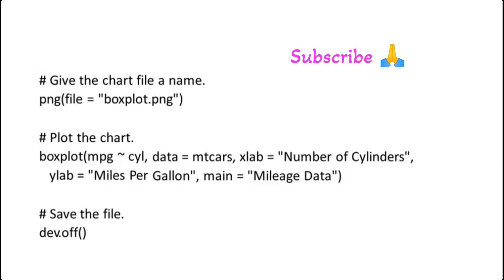x label we have considered to be number of cylinders, y label we have considered like miles per gallon, and main title of the boxplot we have considered as the mileage data.